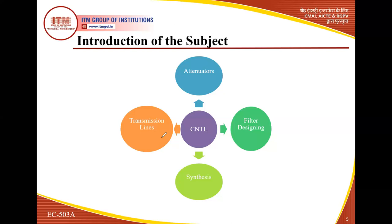The transmission line is ultimately important because power is basically transferred through the transmission line from the generation point to the distribution point. We study different parameters of the transmission line — primary constants, secondary constants — and location of fault is an important thing. So these are the overall structure of CNTL — this is just the introduction of the subject.